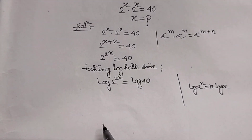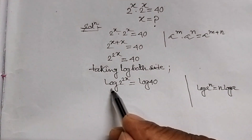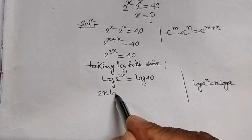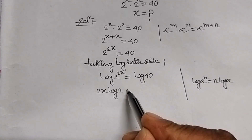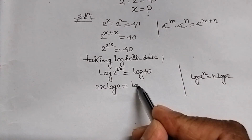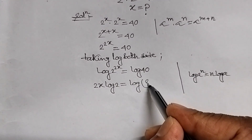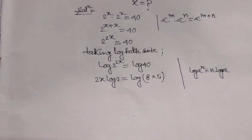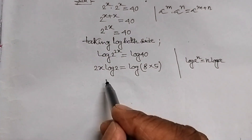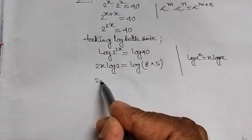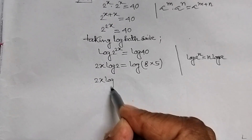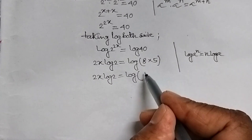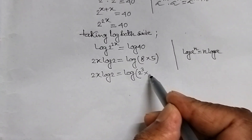Therefore, log of 2 power 2x can be written as 2x log 2 equal to log of 40, which can be written as log of 8 into 5. The next step will be 2x log 2 equal to log of 8, which can be written as 2 cubed into 5.